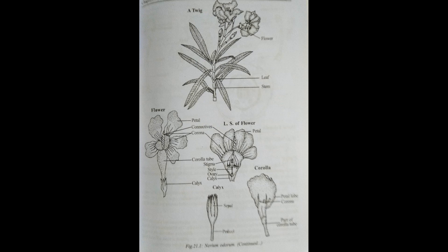Next, the leaf characters: leaves are simple, petiolate, exstipulate, with reticulate venation.